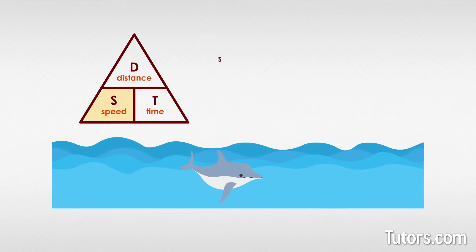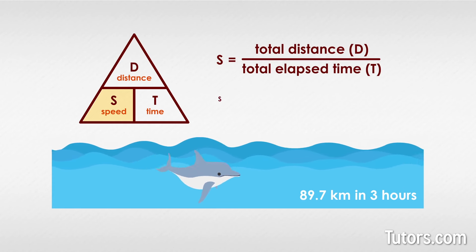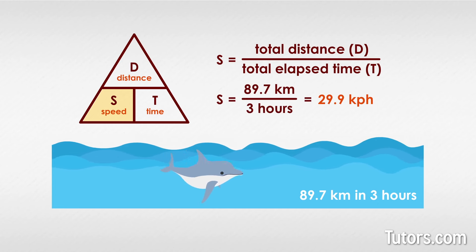Say you want to find the average speed of a Pacific bottlenose porpoise. You are told that they can move 89 kilometers in 3 hours. Plug those two given numbers into the triangle in their corners to get S equals 81.7 kilometers divided by 3 hours equals 29.9 kilometers per hour.